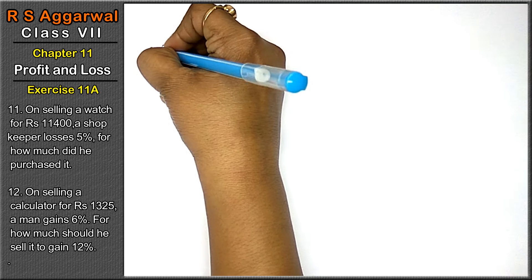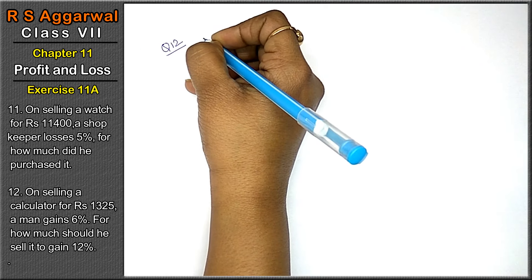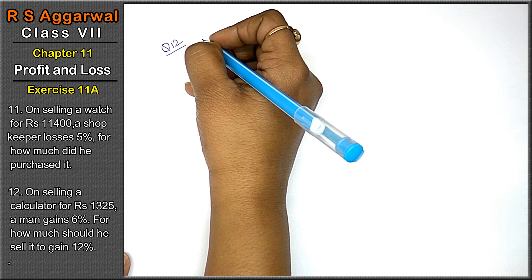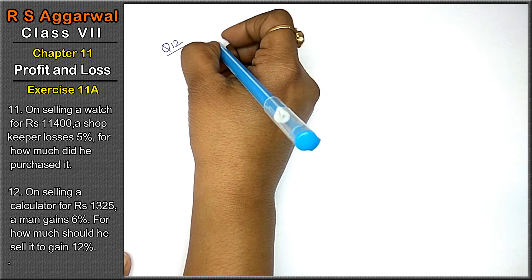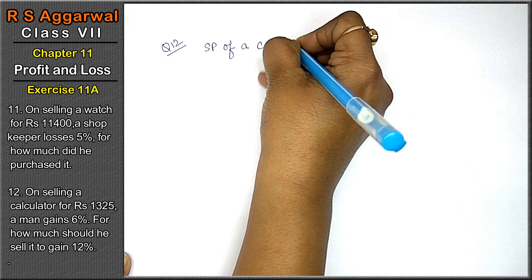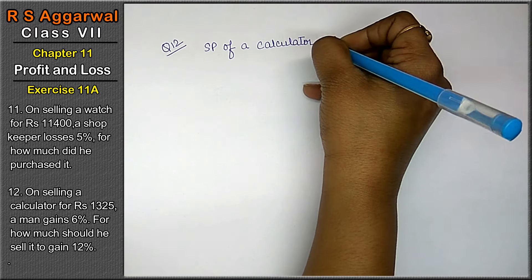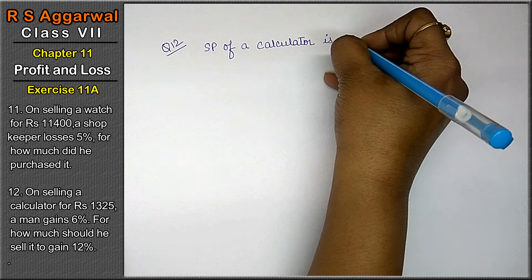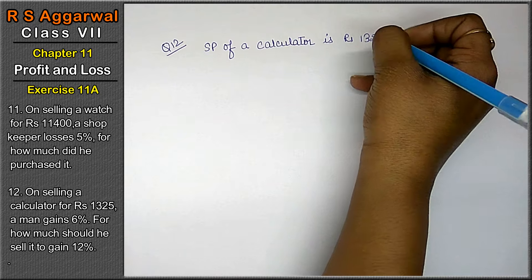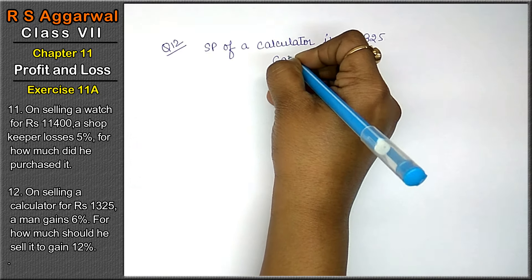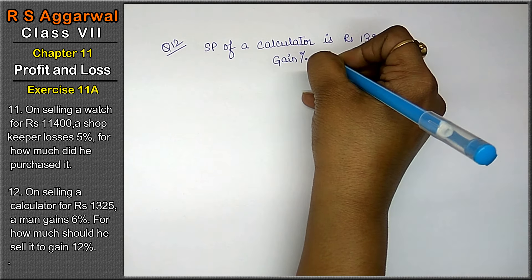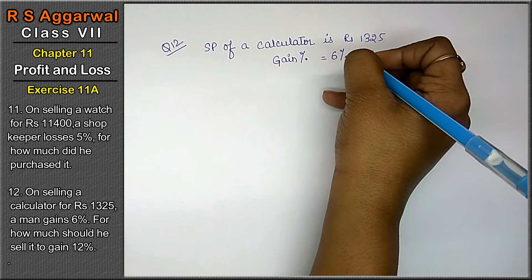Let's do question number 12 of chapter 11, profit and loss, exercise 11A. Question number 12: On selling a calculator for Rs. 1,325, a man gains 6%. Whenever the percentage sign is given, it means gain percent or loss percent.